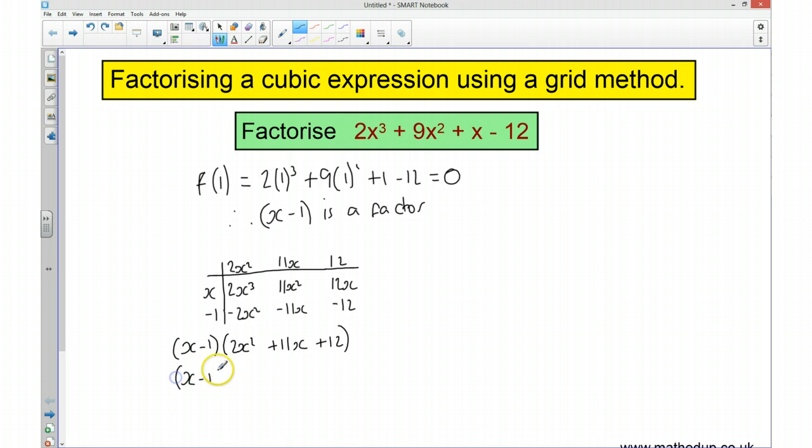So I'm going to have 2x squared plus 2x squared plus 8x plus 3x gives me the 11x. And that gives me the 12 there.